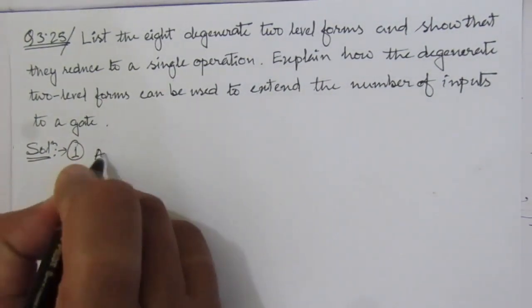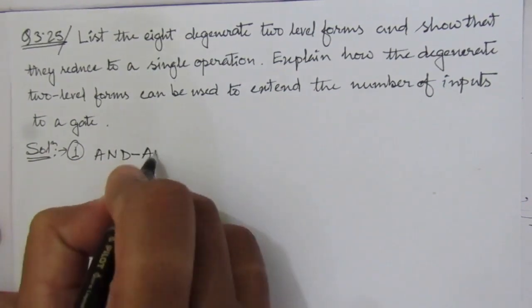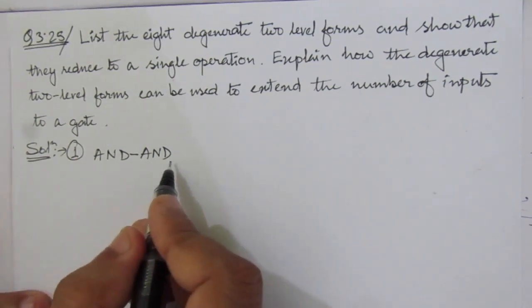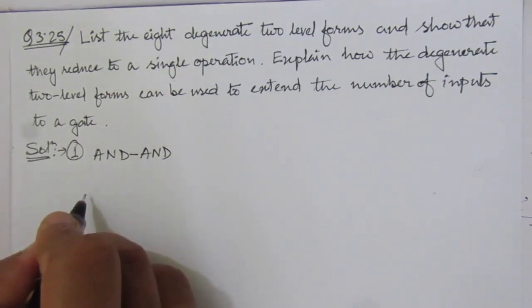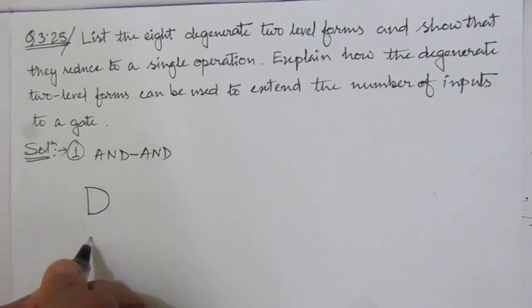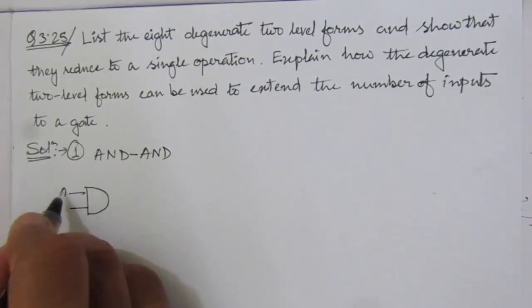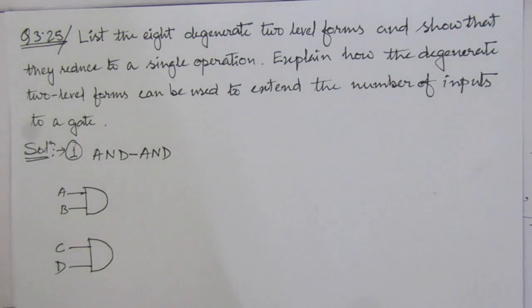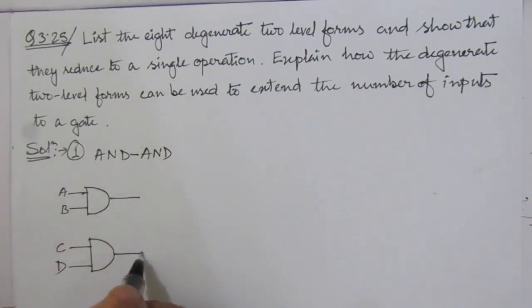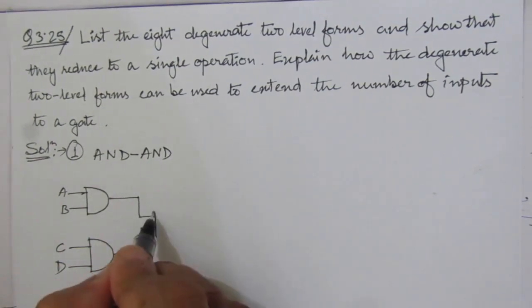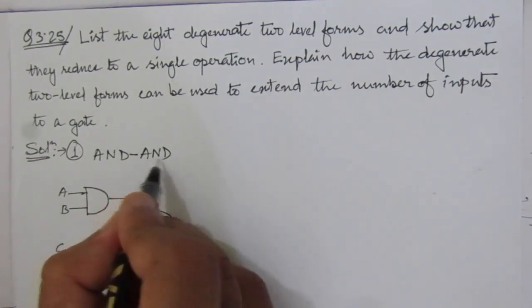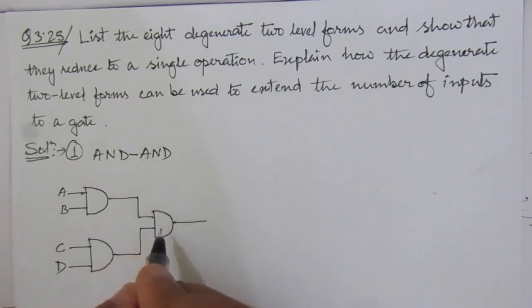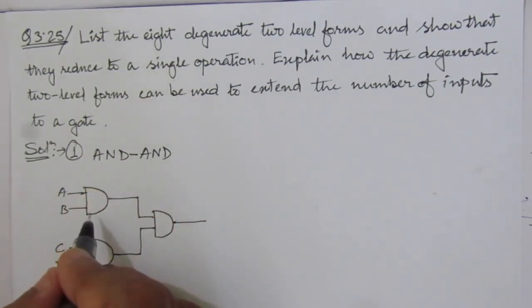The first form is AND-AND. In the first level we will use an AND gate and in the second level also we will use an AND gate. So we have two AND gates in the first level with inputs A, B and C, D. The outputs will become the input of an AND gate in the second level.